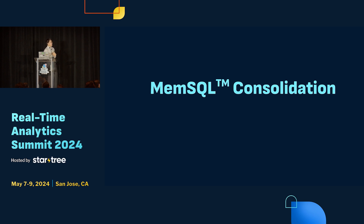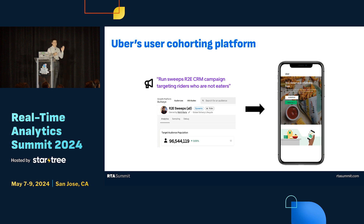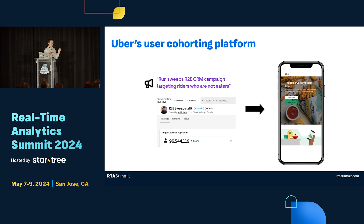Now I'm going to talk about our consolidation with MemSQL. There are several use cases on MemSQL, but today I'll highlight the most important one, which is our user cohorting platform. This platform is mainly for segmentation and targeting for our marketing team. The marketing team wants to identify Uber users and launch campaigns or send promotions to groups — for example, identifying people interested in fried chicken or healthy food based on past ordering history or preference. This platform is in charge of managing those.